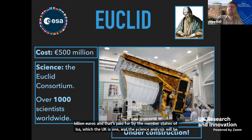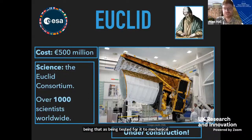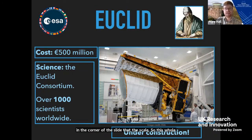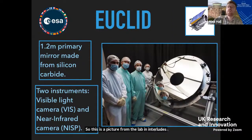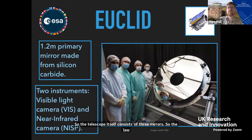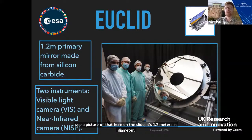In this picture you can see a model of the telescope — not the actual telescope that will be sent into space, but a mock-up being tested for mechanical stability. You can see some lab technicians in the corner for scale. This whole thing weighs about two metric tons and is currently under construction in a lab in Toulouse, France. The telescope itself consists of three mirrors; the largest is the primary mirror — 1.2 meters in diameter — made from silicon carbide, the same stuff they make bulletproof vests from.